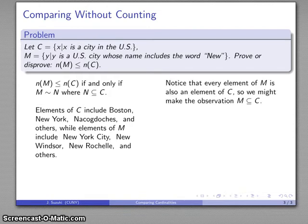And it's worth making an observation that every element of M, everything that's a U.S. city whose name includes the word new, is a city in the U.S. So every element of M is an element of C. And so that says that M is a subset of C. And that emerges directly from our definition of what a subset is.